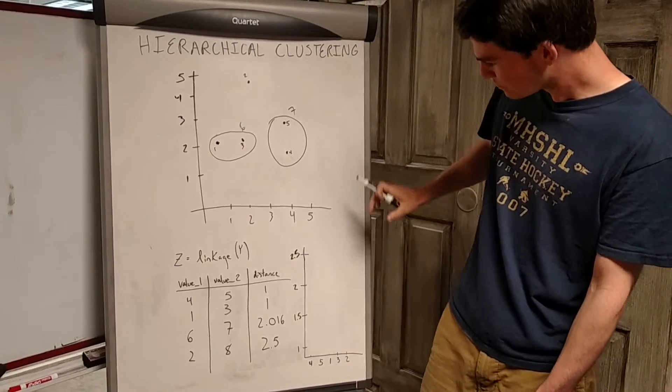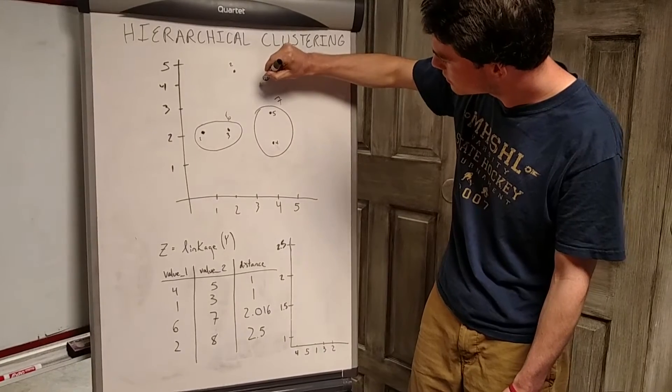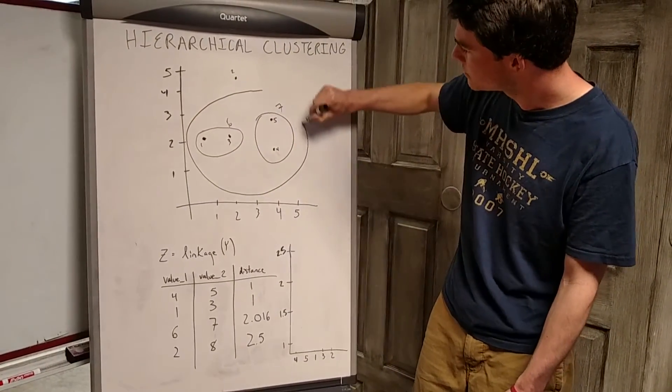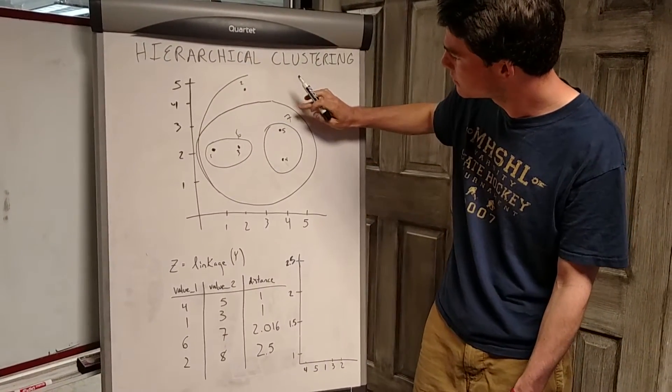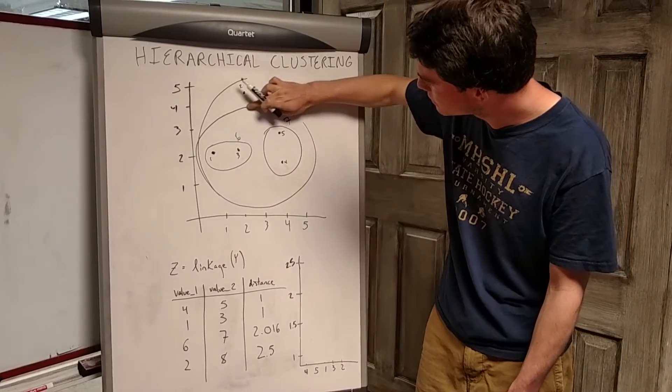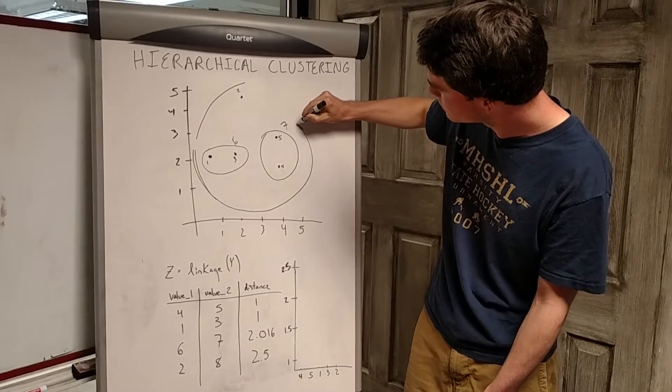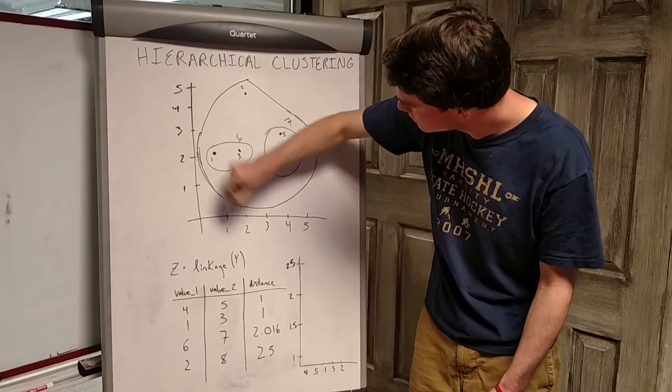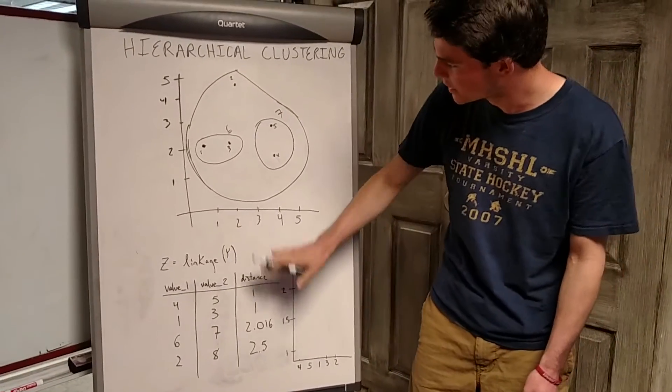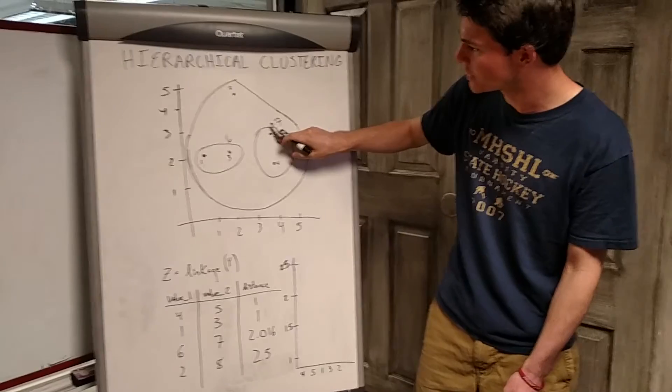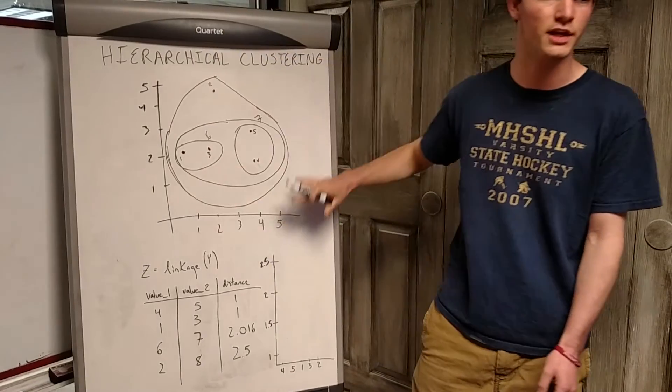I'm going to call this cluster six and this one seven. Then as we can see, the next closest clusters are formed such that I have encompassed these points in a cluster, these points in a cluster, and then there's one giant cluster that contains all of my points.